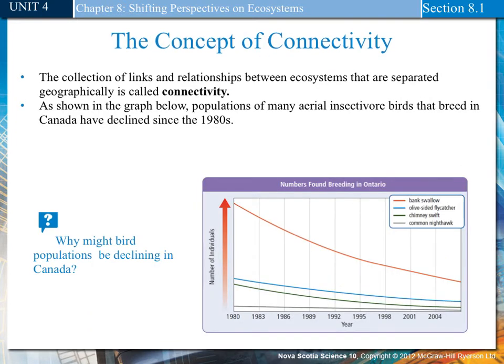The concept of connectivity. A collection of links and relationships between ecosystems that are separated geographically is called connectivity. As shown in the graph, populations of many aerial insectivore birds that breed in Canada have declined since the 1980s. Scientists are not sure exactly why these populations are declining. Because the birds are migratory, it is difficult to determine exactly what is causing the decline.